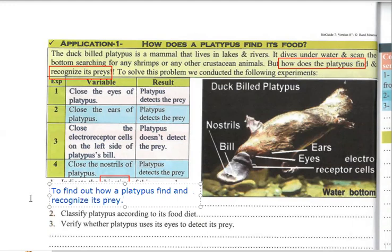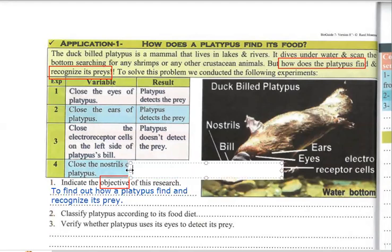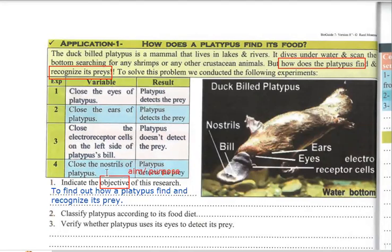This is the objective. Another word for objective is aim or purpose. So when a question asks about the objective of an experiment, the aim, or the purpose — they all point to the same thing: what are we trying to do in this experiment? Why are we conducting it? In this case, it is to find out how a platypus finds and recognizes its prey.